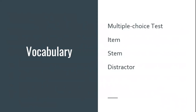Each item has a stem and distractors. The stem is the prompt or question part of the item — that opening phrase like 'What is the definition of...' And the distractors are the incorrect response options. If letter C is the correct answer, then A, B, and D would be the distractors. The correct response — whichever letter it is — is listed alongside the stem.